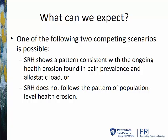What can we expect? One of the following two competing scenarios is possible. Either self-reported health shows a pattern consistent with the ongoing health erosion found in pain prevalence and allostatic load, or self-reported health does not follow the pattern of population-level health erosion. If self-reported health is a valid and reliable measure of population health, it will follow the first scenario. The emergence of the second scenario would indicate that self-reported health does not move along with other population health metrics that are more closely aligned with what is happening in our bodies. The results will have direct relevance to the issue of validity of self-reported health as a measure that can be utilized to measure and track population health.